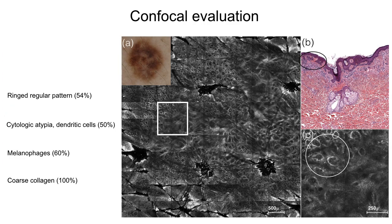Confocal microscopy can highlight the histopathological structures, especially those located at the surface. It is possible to see a ring pattern, some cytological atypia and dendritic cells, melanophages, and collagen alteration corresponding to coarse collagen fibers.